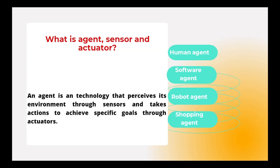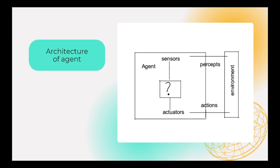For a shopping agent: when searching online, the agent sends and receives HTML pages and URL suggestions with the help of actuators. This is the architecture of an agent — sensors perceive the environment, and actions are performed with the help of actuators.